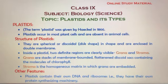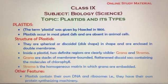This video covers the topic of Plastids and their types for Class 9th Biology, Chapter 5: Cell as a Fundamental Unit of Life. The term Plastids was given by Haeckel in 1866. Plastids occur in most plant cells and are absent in animal cells.